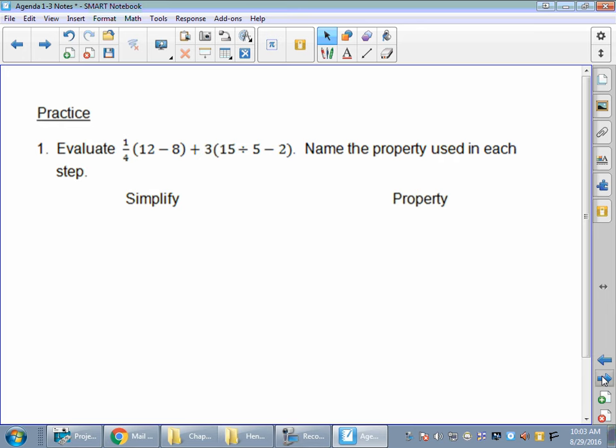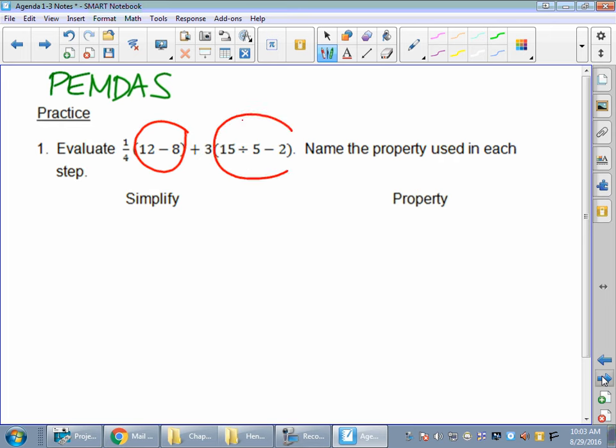Name the property used in each step. So I've got 1 fourth multiplied by 12 minus 8 plus 3 multiplied by 15 divided by 5 minus 2. So think PEMDAS. We're going to still use order of operations, but now we're going to stop whenever we do them. That's why I said remember you have to show your steps or your work along the way because that tells us we can stop and say what property is allowing us to do that. So first of all, if we're going to do this, we're going to start with parentheses or grouping symbols, right?